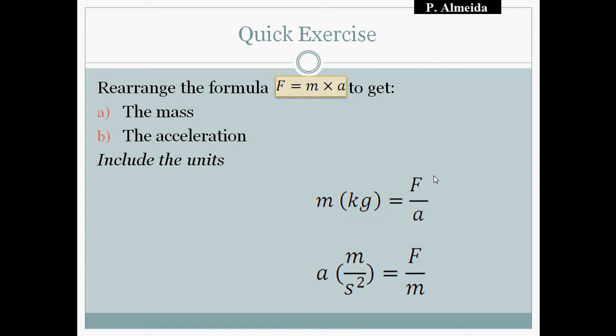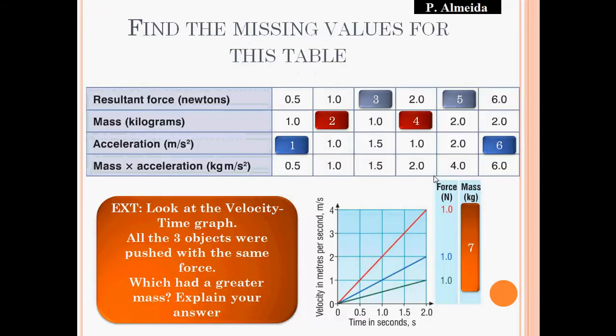Now we're going to practice. I have a table from AQA with columns for resultant force in Newtons, mass in kilograms, acceleration in meters per second squared, and the product mass times acceleration in kilogram meters per second squared. I want you to fill in the gaps for questions one through six. Question seven asks you to look at the velocity-time graph — all three objects were pushed with the same force — and explain which had the greater mass just by looking at the graph.